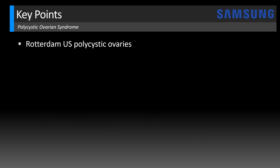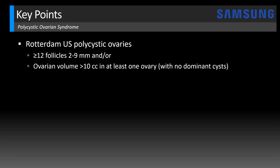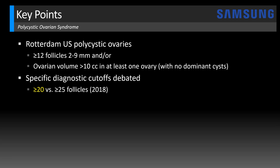Now let's look more closely at what the Rotterdam criteria defined as the ultrasound appearance for a polycystic ovary. Back in 2003, it was defined as 12 or more follicles measuring 2 to 9 millimeters in size and/or ovarian volume greater than 10 cc's in at least one ovary, excluding any dominant cysts like corpus luteal cysts or other dominant follicles. These specific diagnostic cutoffs have been debated over the years, and most recently in 2018, 20 or more follicles has been suggested as a more accurate cutoff — or even up to 25 follicles — so generally 20 or more is the commonly used cutoff for follicle number.